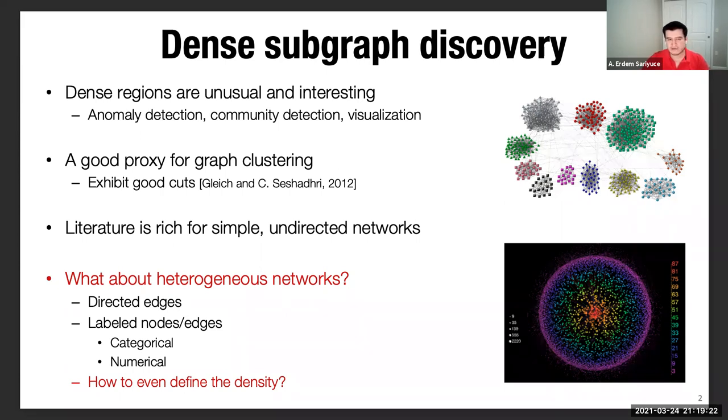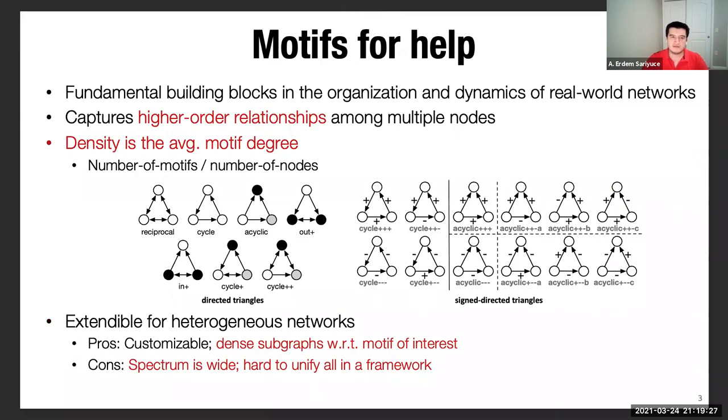So in order to handle this problem, we basically use motifs, which help us define the density in the form of average motif degree. We basically look for the number of motifs in a given subgraph and normalize it with respect to number of nodes in the subgraph. Motifs are in general fundamental building blocks in the organization of real-world networks. They capture the high-order relationships and also can be labeled or directed.